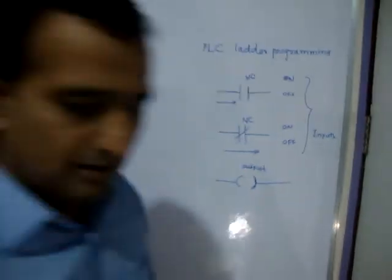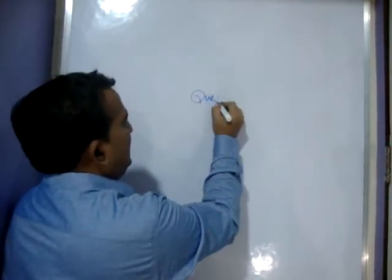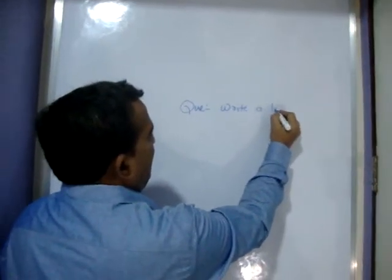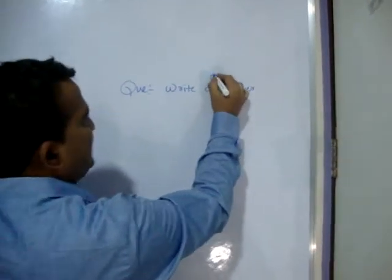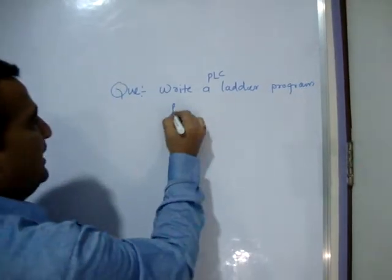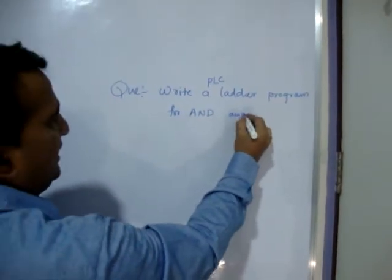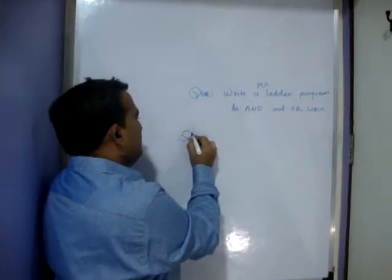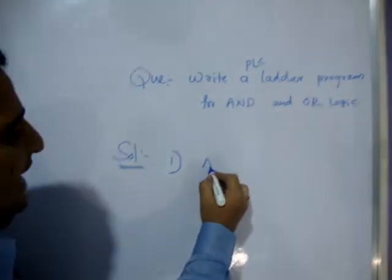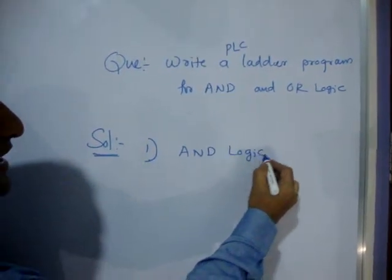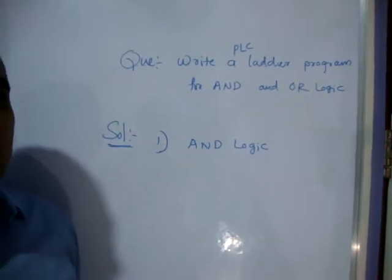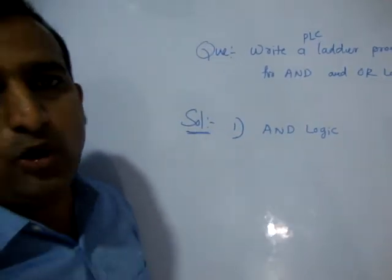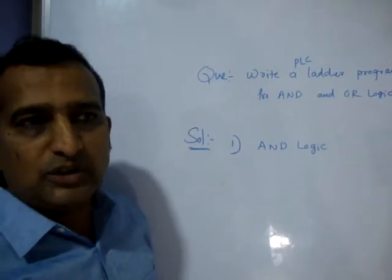For example, I will draw a program. The question is: write a PLC ladder program for AND and OR logic. First of all I will write for AND logic. In AND logic, there may be 2, 3, or 4 inputs — when all the inputs are ON then only the output is ON.